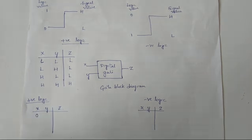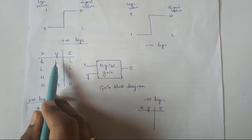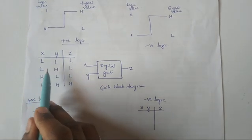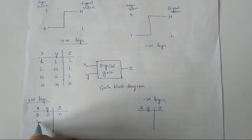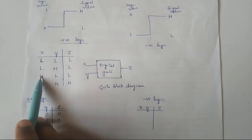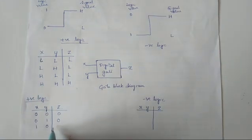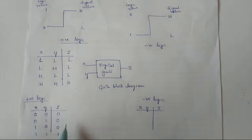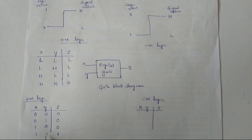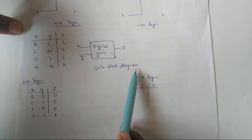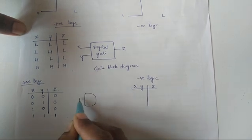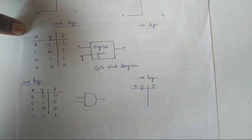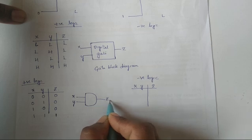Applying positive logic: L L → L becomes 0 0 → 0; L H → L becomes 0 1 → 0; H L → L becomes 1 0 → 0; H H → H becomes 1 1 → 1. Observe this truth table — when all inputs are 1 the output is 1. This is the AND gate truth table, so this digital gate acts as a positive logic AND gate.